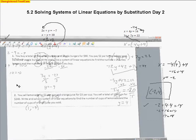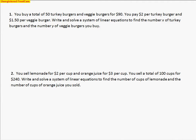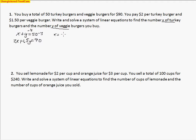Let's take a look at another problem. You buy a total of 50 turkey burgers and veggie burgers for $90. You pay $2 for a turkey burger and $1.50 for each veggie burger. We need to write and solve a linear system to find the number of turkey burgers x and veggie burgers y. So x plus y equals 50, since there are 50 total. Each turkey burger costs $2, so 2x plus 1.5y equals 90. I'll subtract y from both sides to get x equals 50 minus y.